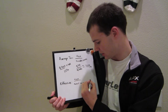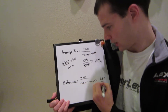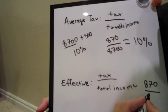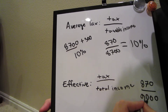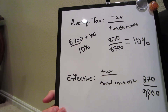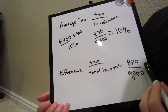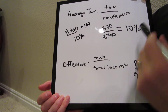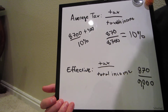My effective tax is going to be a little different. It's going to be the tax — same numerator — $870. Now it's going to be divided by my total income. My total income is $9,000, because it's $8,700 plus the $300 of tax-exempt money that I'm making. And this ratio is going to turn out to be a percentage that's slightly smaller than 10%.